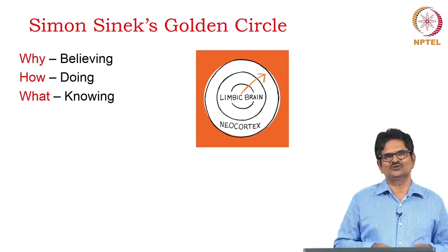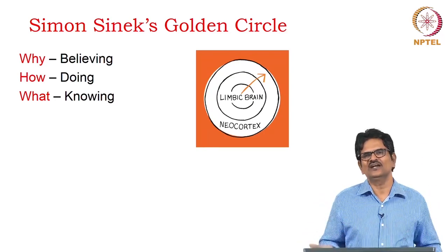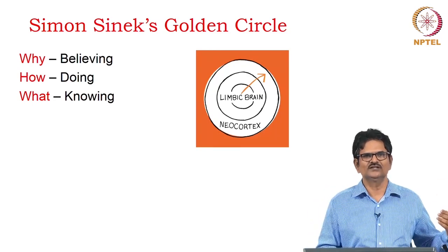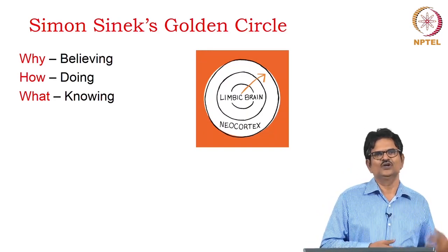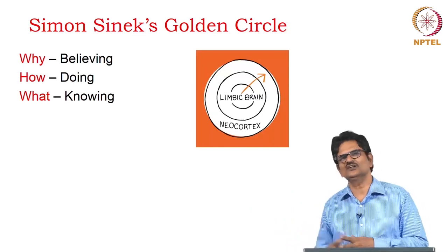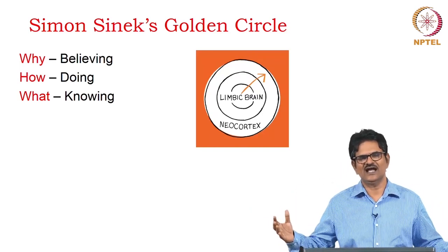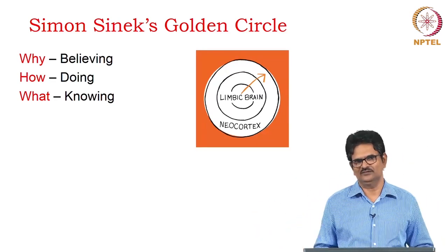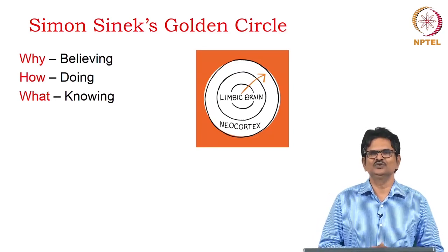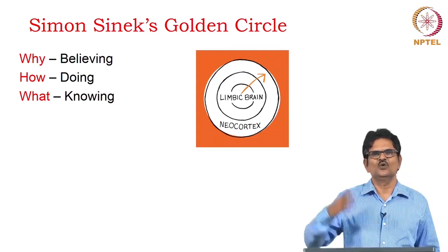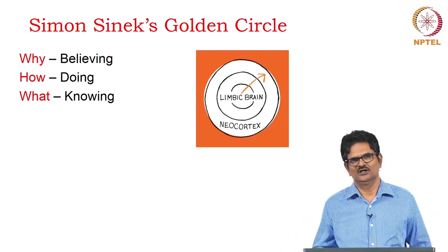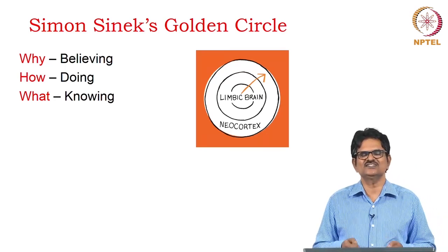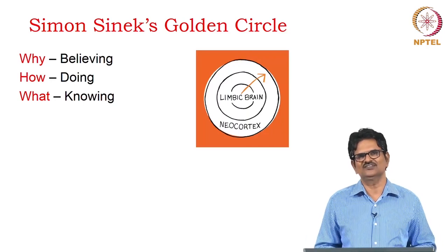Why is at the core — the limbic brain — where we have all kinds of feelings. The second question of how is also connected with feeling. And lastly, what is connected with knowing, which is of the outer circle. What Sinek believes is that we should move from the inner circle to the outer circle, not the other way. He uses his Golden Circle to explain why some companies are very successful and why others are not. That's why we began with the relevance of poetry — why do we have to study poetry? It is ultimately connected with our belief system.